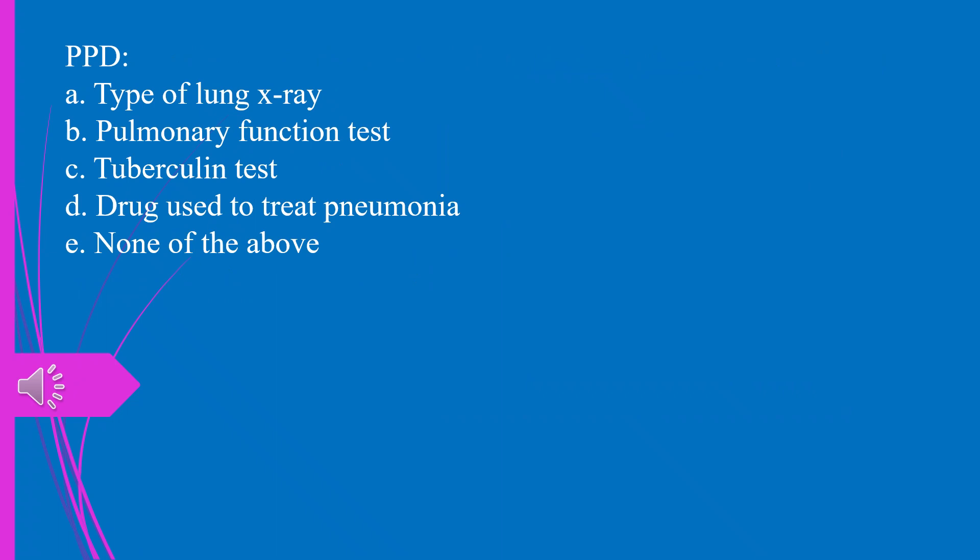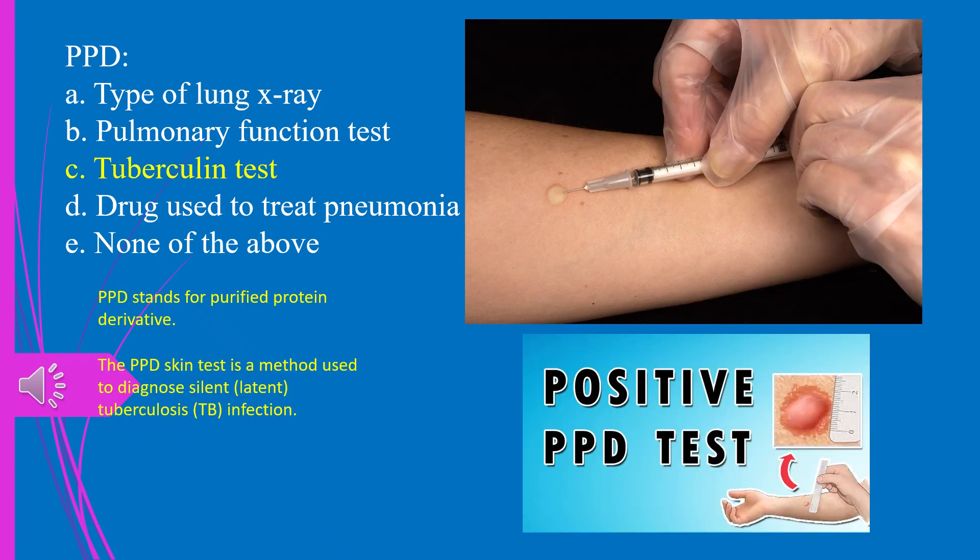Question 24. PPD: a) type of lung x-ray, b) pulmonary function test, c) tuberculin test, d) drug used to treat pneumonia, e) none of the above. The answer is c, tuberculin test.